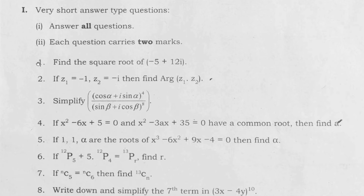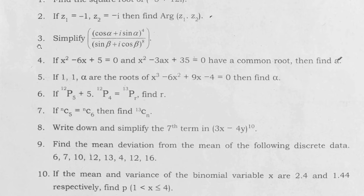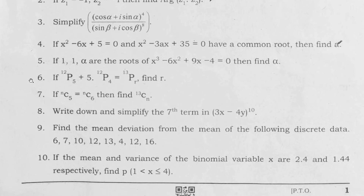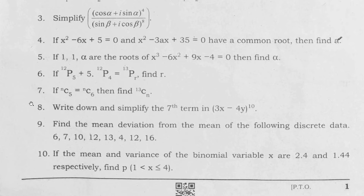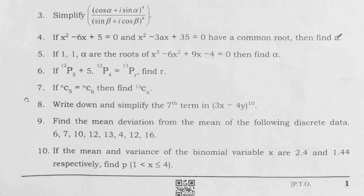First and second VSAQs are from complex numbers. Third VSAQ is from chapter 2, De Moivre's theorem. Fourth VSAQ is from chapter 3, Quadratic Expressions. Fifth VSAQ is from chapter 4, Theory of Equations. VSAQs 6, 7, and 8 are from two chapters — chapters 5 and 6, Permutations, Combinations, and Binomial Theorem.